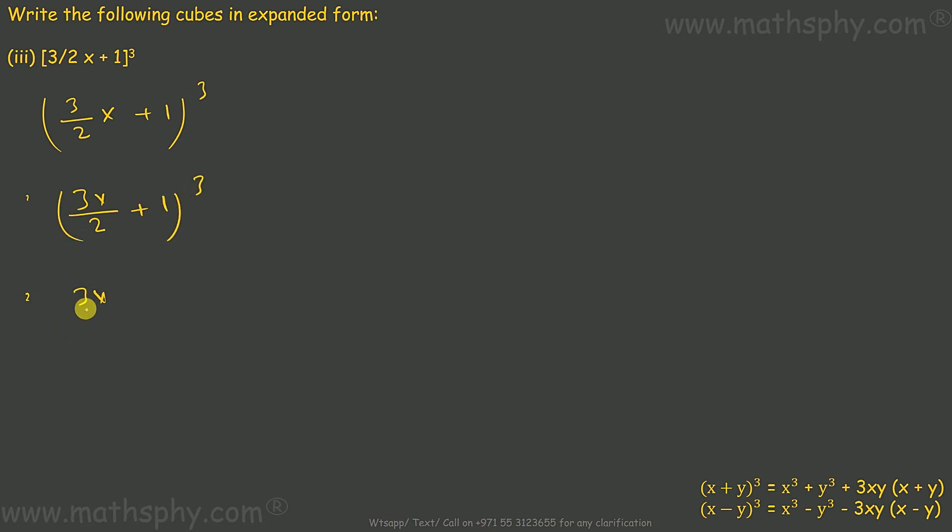I will take it as 3x over 2 whole cube plus 1 cube is 1, plus 3 into 3x over 2 into 1, then 3x over 2 plus 1. This will be 27x cube over 8 plus 1 plus 9x.